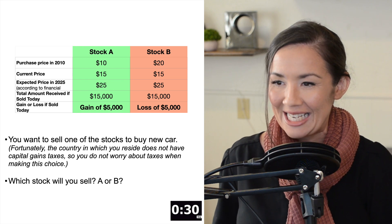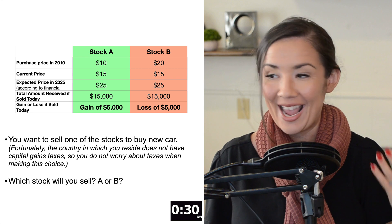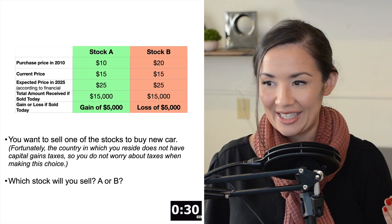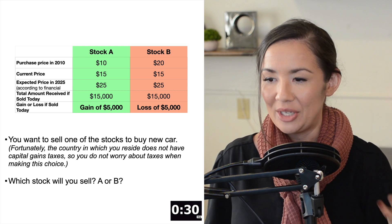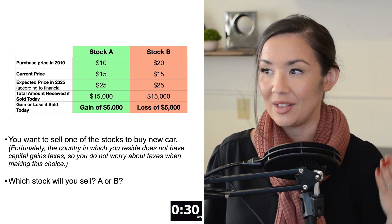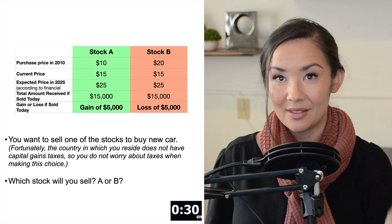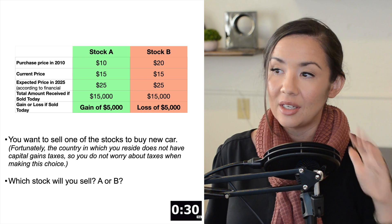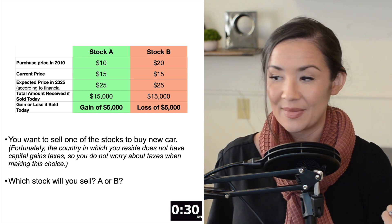The question for you is, say you want to sell your stock and buy a car, and you don't have to worry about taxes in this scenario. Which stock do you sell? Do you sell stock A or do you sell stock B? I'm going to give you 30 seconds to make this decision. I want you to look at the other details in the table as you're thinking about it. Begin.